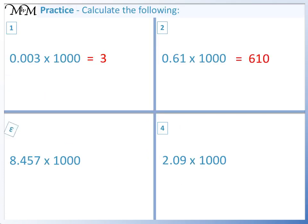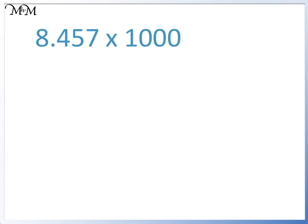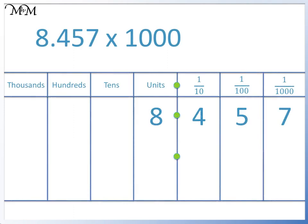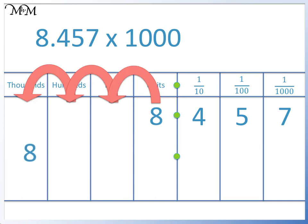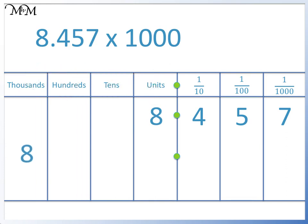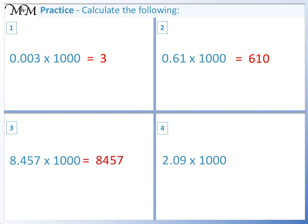Question 3: 8.457 times 1000. We move the 8 three places to the left.